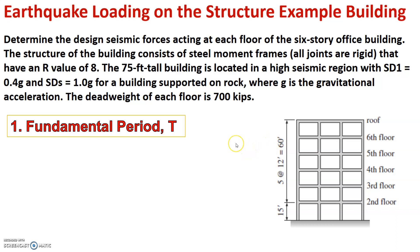Now the first thing that we need to do is to calculate the fundamental period. To calculate the fundamental period the equation that we have is T, or the time period, is equal to CT times HN to the power X where CT is 0.028 for steel structures and X is 0.8 and HN is the height of the building which is 75.